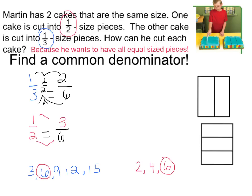It's the same amount. So that tells me I'm going to make both of these cakes cut into 6 pieces. Are those equal size pieces? Yes they are. Now I can look at my thirds — I'm going to shade in one-third. There's my one-third, and one-third equals 2/6. And now let's look at my one-half. My one-half equals 3/6.